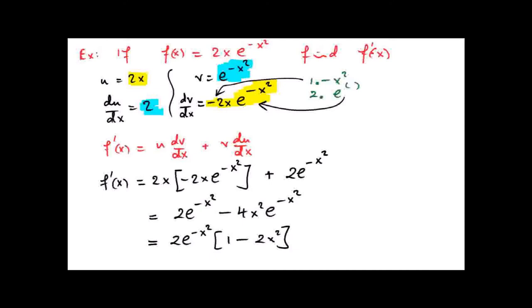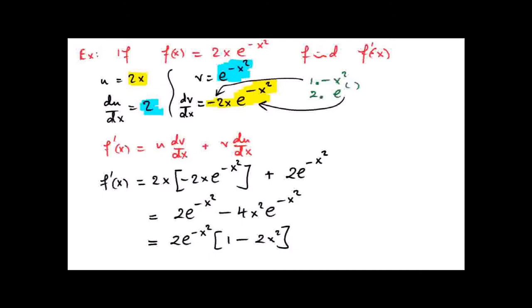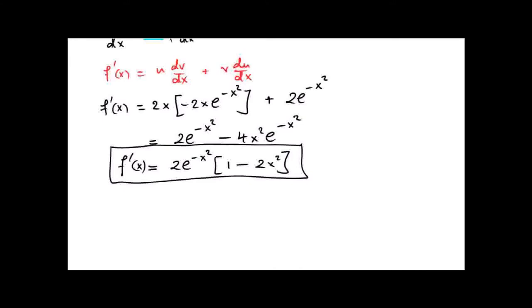Now let's add a little bit to the question. Part 1 was find f dash x, which is now done. Part 2: for what values of x is f dash x equals 0? Find x if f dash x is 0. So 2e to the power of minus x squared multiplied by 1 minus 2x squared is equal to 0.